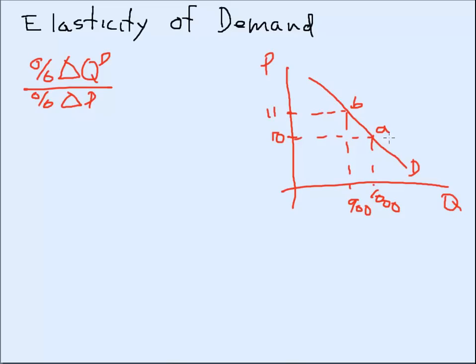We take the new minus the old. So in this case we want to take the change would be nine hundred minus one thousand. So in other words, oops one thousand, helps to have the right number of zeros. Amazing how that matters. Now we want to divide by the average quantity. So what? Add them up, divide by two.